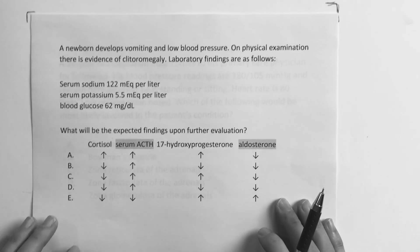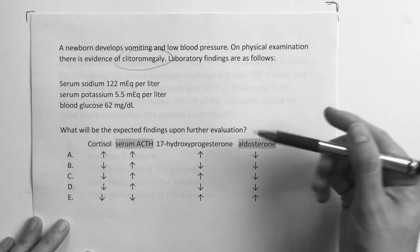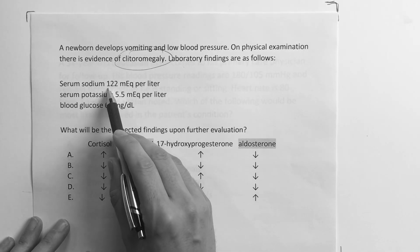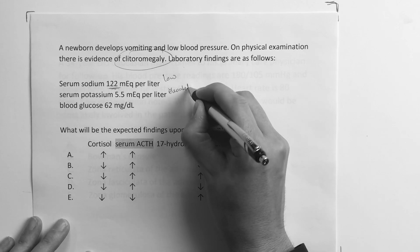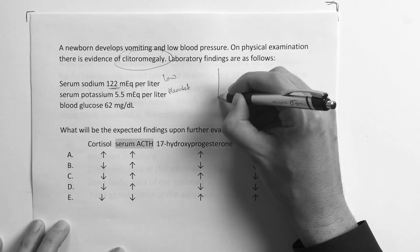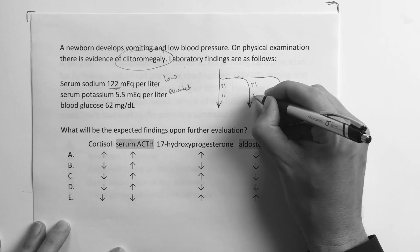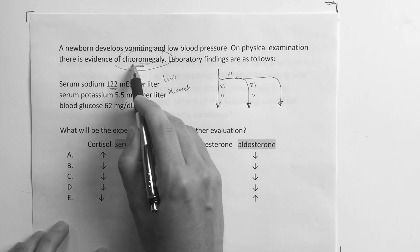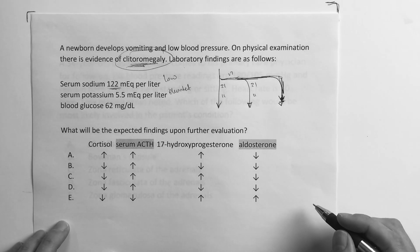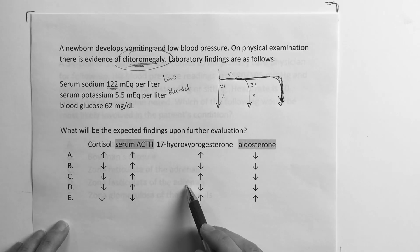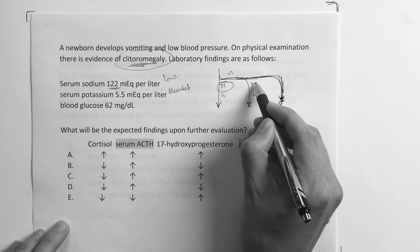So let's look at these questions. It says a newborn develops vomiting and low blood pressure. On physical exam, there's evidence of clitoromegaly. So we got to have that in our thought process. Lab findings are as follows. Sodium is 122, now that's low. Potassium, a little bit high, a little bit elevated. And then blood glucose is low. Alright, so it's got all the makings. So I would just come here and on the chart, I'd probably have this memorized by that time. And all you do is you label it 21, 21, 11, 11, and 17. And the fact that they have this clitoromegaly, I know that everything got pushed this way. And so I know, and they didn't give me anything about hypertension, but they said it was low sodium. So I know that it's got to be this deficiency.